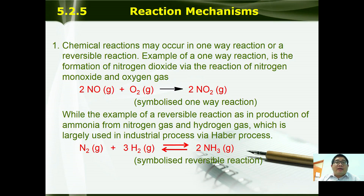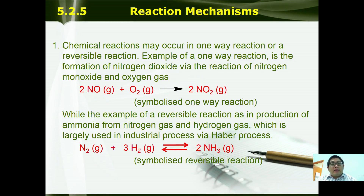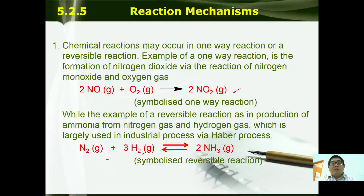A chemical reaction may occur as a one-way reaction or a reversible reaction. An example of a one-way reaction is the formation of nitrogen dioxide from nitrogen monoxide and oxygen gas, while an example of a reversible reaction is the production of ammonia from nitrogen and hydrogen gas. We symbolize a one-way reaction with a one-way arrow and a reversible reaction with a reversible arrow.